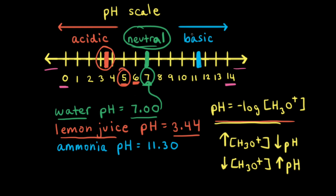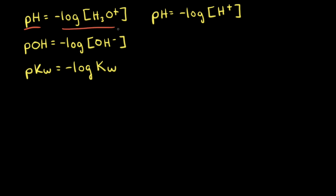If an aqueous solution has a pH greater than 7, we say that solution is basic. Our cleaning solution with ammonia had a pH of 11.30, placing it toward the right of the pH scale — making it a basic solution. As you move to the right on the pH scale, you increase in basicity. pH equals the negative log of the concentration of hydronium ions; similarly, pOH is defined as the negative log of the concentration of hydroxide ions.